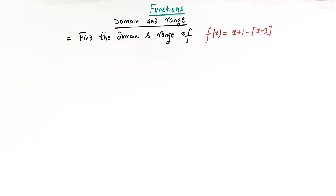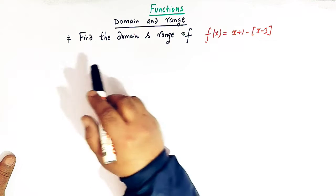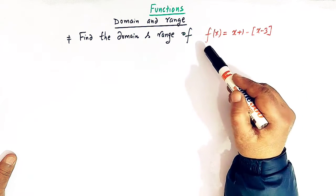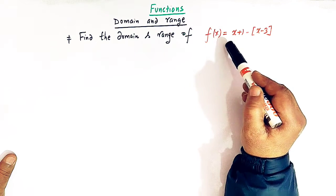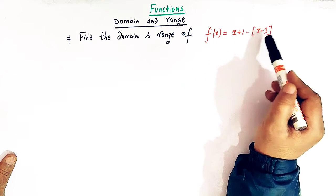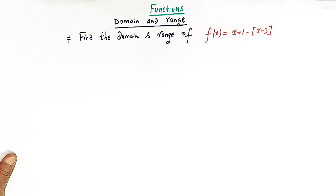Hello viewers. In today's session we are going to discuss a very important problem from functions related to domain and range. We have a problem in which we have to find the domain and range of the function f(x) = x + 3 minus the greatest integer of (x - 3).